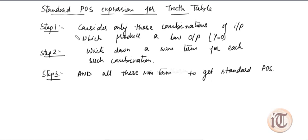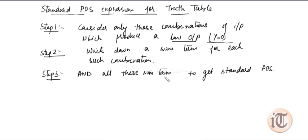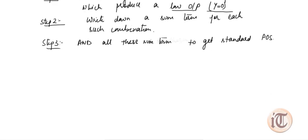Today we are going to discuss how we write a standard POS expression for a given truth table. For a POS expression, step one is to consider only those combinations of input which produce a low output — meaning only those combinations where output y equals zero. Step two is to write down a sum term for each such combination where y equals zero. Step three is to take the product of all those sum terms to get the standard POS expression.